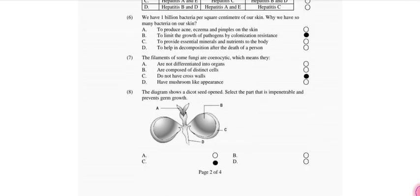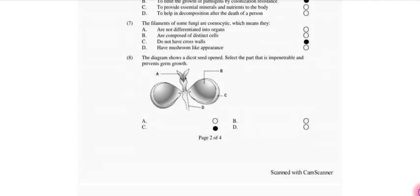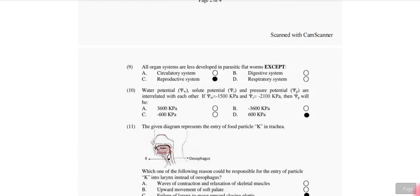The diagram shows the dicot seed. The selected part is impenetrable to prevent germ growth. So that is part C. Moving to the next MCQ: All organ systems are less developed in parasitic flatworms except the reproductive system.